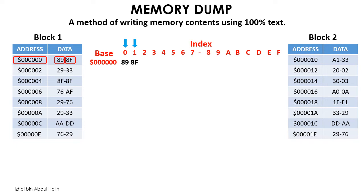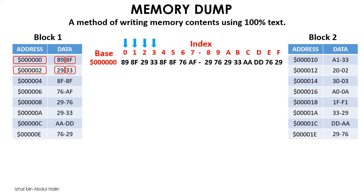The data at address 2 is 29, written under index 2; address 3's content is written under index 3. The rest of the data from address 4 to F are filled in similarly. Looking at the memory dump, you can see addresses and data. To obtain the address of a particular data — for example, 29 — add the even base address 0 with the corresponding index, which is 8, giving address 8. The base address plus the index gives you the actual address you are looking for.